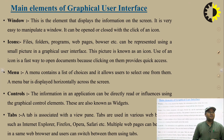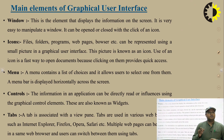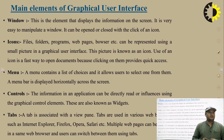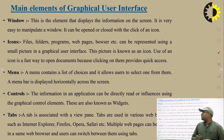The main elements of a graphical user interface are windows, icons, options, menus, controls, and tabs. To design a GUI, to make a screen, or to design a web page, these basic elements are required. I will discuss each component one by one.